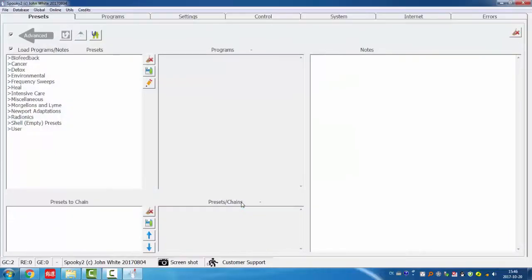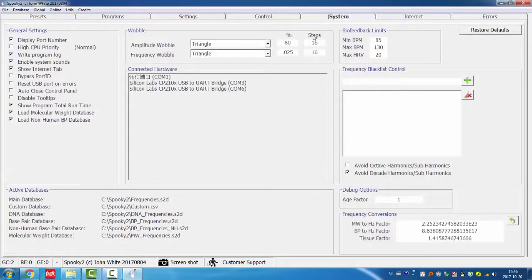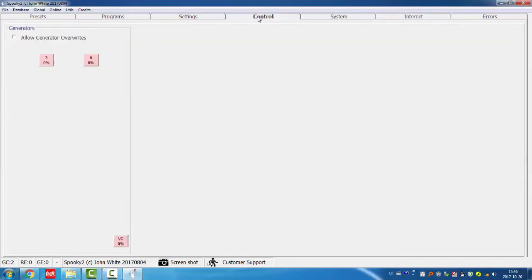Ok, now we go to the system tab to check whether there are two generators detected. You can see here, there are two generators. And we can also check from the control tab, you can see two square buttons here. And we call it generator button.